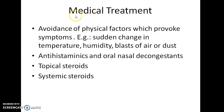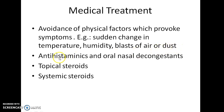Now let us see about the medical treatment for vasomotor rhinitis. Avoidance of physical factors which provoke symptoms — like sudden change in temperature, humidity, blasts of air, or dust — can help the patient remain free of symptoms. Antihistaminics and oral nasal decongestants can be given. Topical steroids can also be prescribed, and systemic steroids can be given as well.